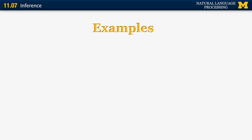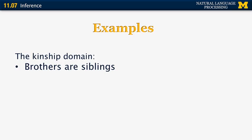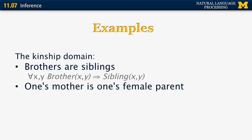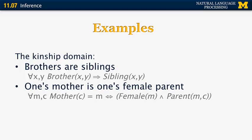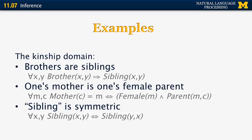Now let's see how we can use first-order logic for inference, with three examples from the kinship domain. First, brothers are siblings: for all X and Y, brother(X, Y) implies sibling(X, Y). Second, one's mother is one's female parent: for all M and C, mother(C) = M is equivalent to female(M) and parent(M, C). Third, the sibling relation is symmetric: for all X and Y, sibling(X, Y) is equivalent to sibling(Y, X).